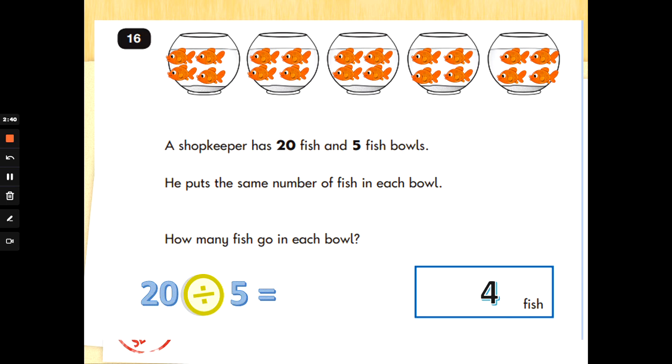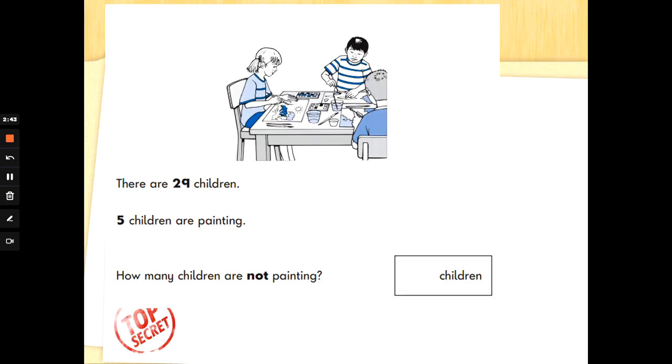Because 20 divided by 5 - 5, 10, 15, 20 is 4. Okay.